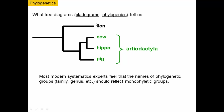Here's an accurate phylogeny of lions, cows, hippos, and pigs. These three — cows, hippos, and pigs — are all termed artiodactyls; they're in that order. Artiodactyla is defined as a monophyletic group, going back to this ancestor and including all of its descendants.